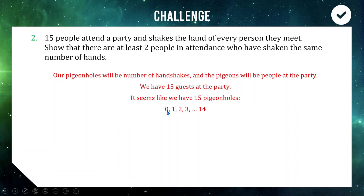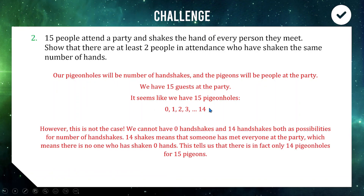The key insight is that zero and 14 cannot both exist in our sample space. Zero means someone shook no hands at all, while 14 means someone shook every other person's hand — these are contradictory. If someone shook everyone's hand, nobody could have shaken zero hands. So we don't have 15 pigeonholes, we only have 14. With 15 guests and only 14 valid categories, by the pigeonhole principle at least two people must have shaken the same number of hands.